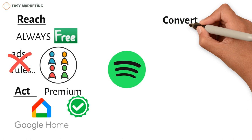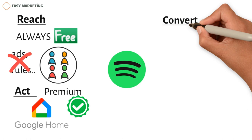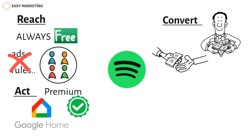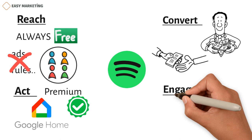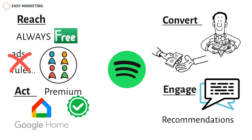Convert: Spotify doesn't just make money from its Premium memberships — all of those ads are paid for as well. They have a variety of ways to make money. Engage: They talk to users with their recommendations, one of their most trusted tools. They use a formula to figure out what music you might like, and it works very well.